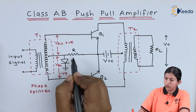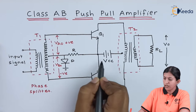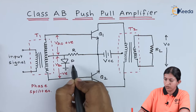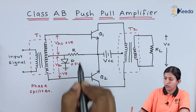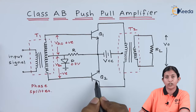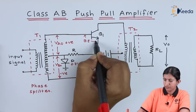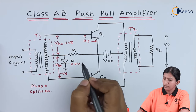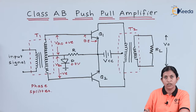Here we use a diode and resistor. The supply voltage VCC is given to the diode, and the voltage drop across the diode, which is 0.7 volts, is applied to the base of both transistors Q1 and Q2 at the base-emitter junction through the transformer secondary winding. Because of that, transistor Q1 and Q2 will be on during both the positive and negative half cycles.